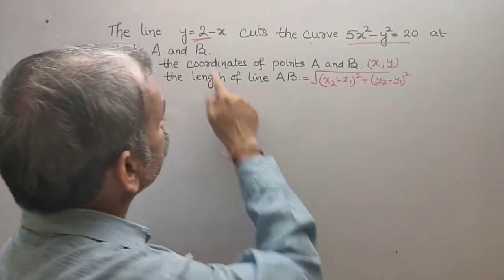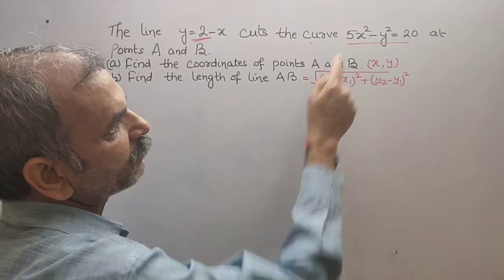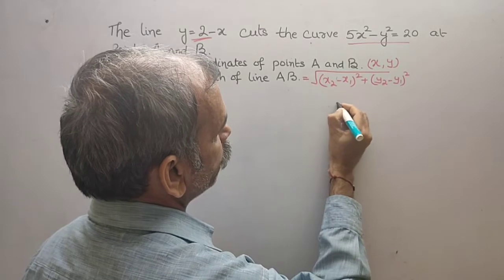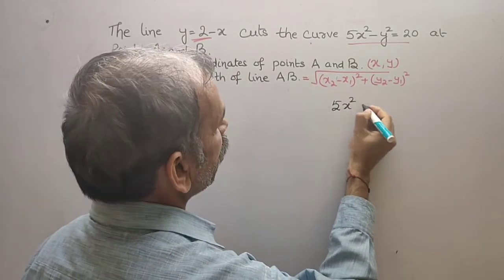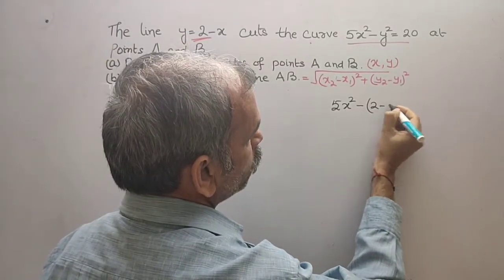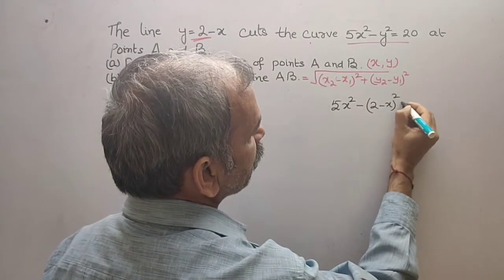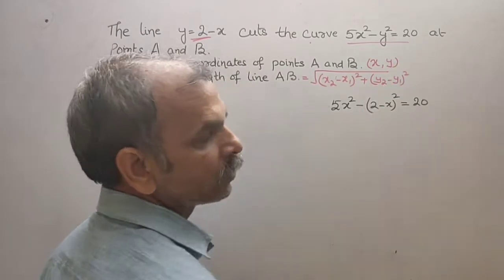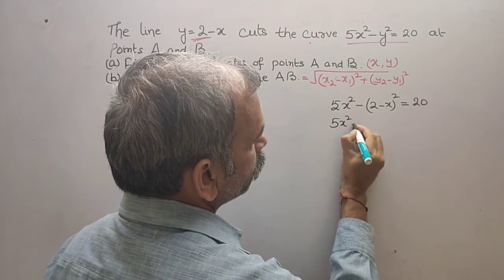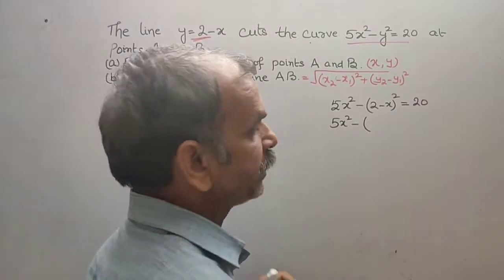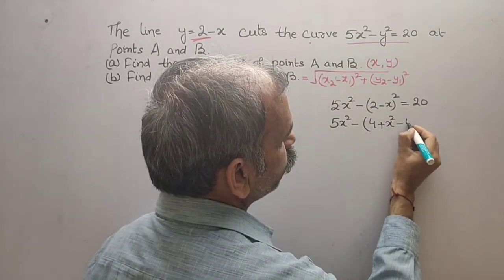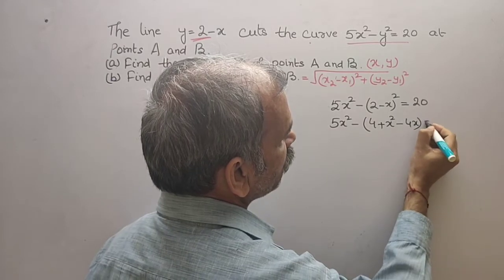So first what we will do? We will substitute y in our equation 5x². So we will get what? 5x² minus y² is 2 - x, (2 - x)² that is equal to 20. They have given. Now solve this.